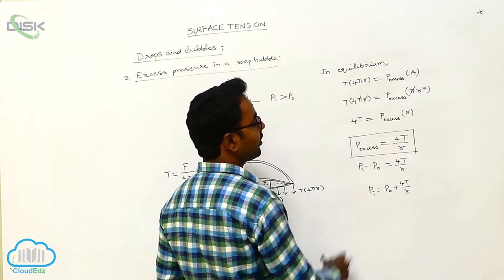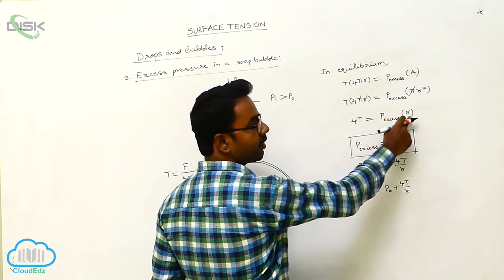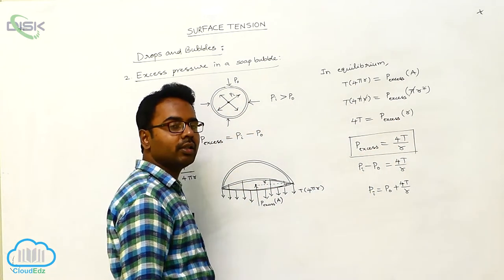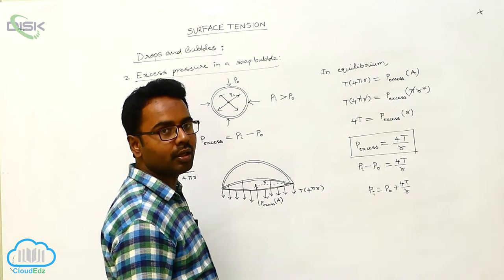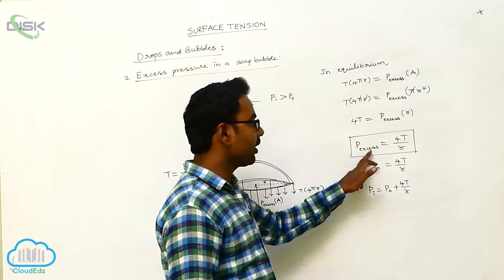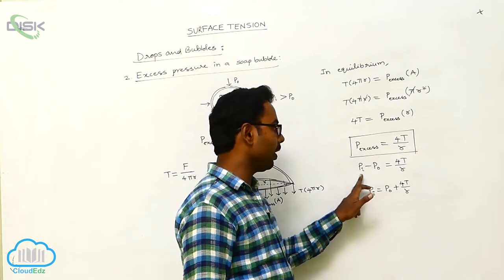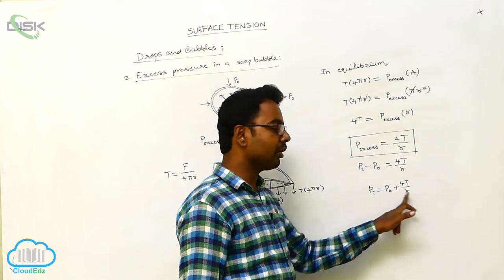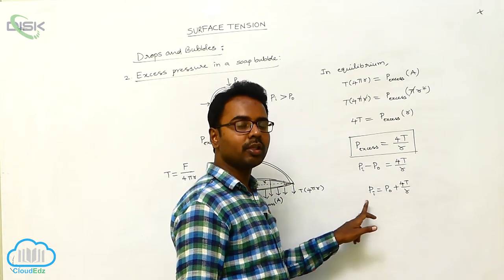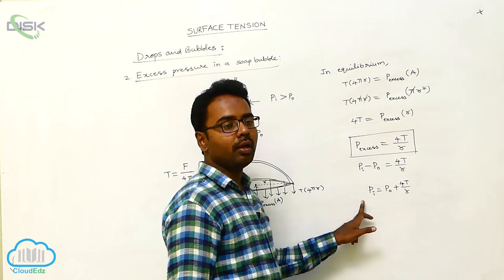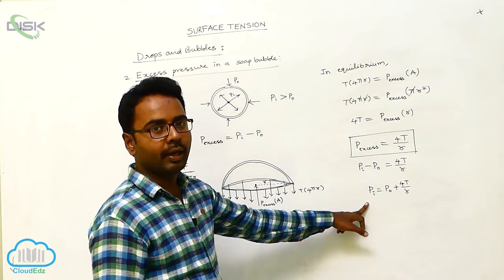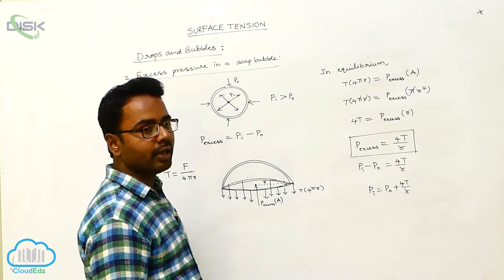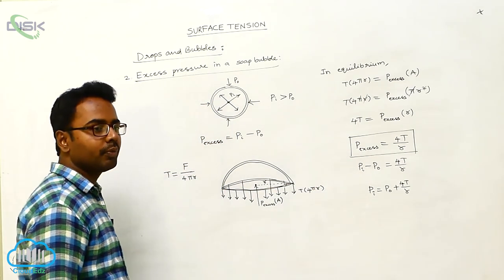Pi and R cancel, giving 4T equals P_excess into R. Therefore P_excess equals 4T divided by R. So the excess pressure in a soap bubble is 4T/R. P_excess can also be written as Pi minus P0, so Pi minus P0 equals 4T/R. Therefore Pi equals P0 plus 4T/R. In this way, we derive the excess pressure in a soap bubble.